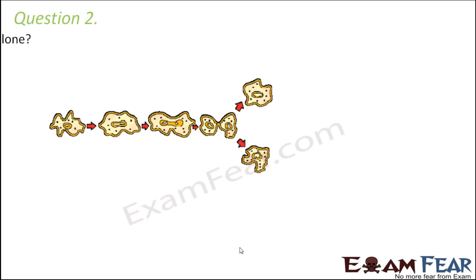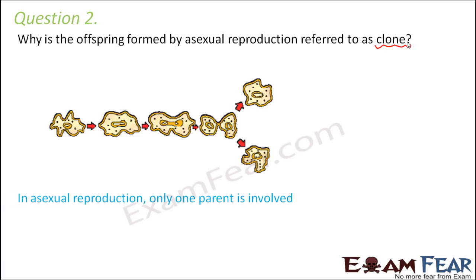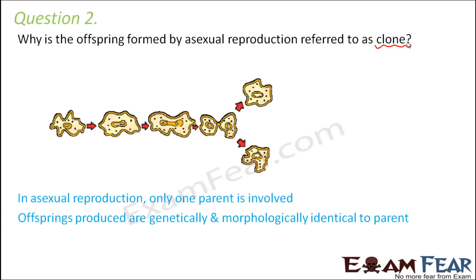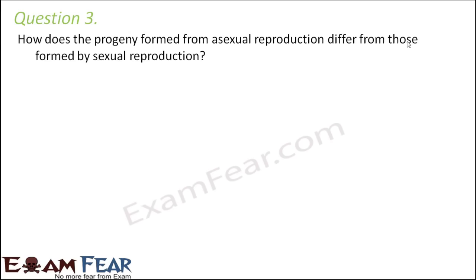Question number two: why is the offspring formed by asexual reproduction referred to as a clone? A clone is an exact copy of something else. In asexual reproduction the organisms produced are genetically as well as morphologically identical to the parents, and that is why they are called clones. Since only one parent is involved, it is very easy to copy the DNA and produce an exact replica.